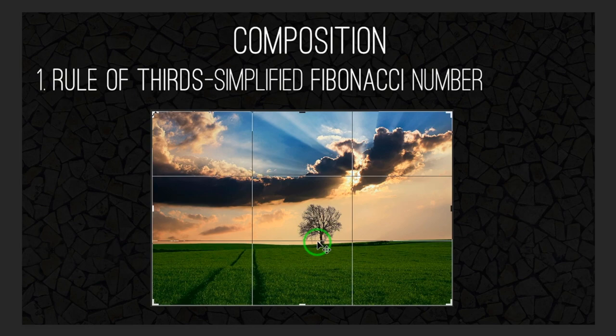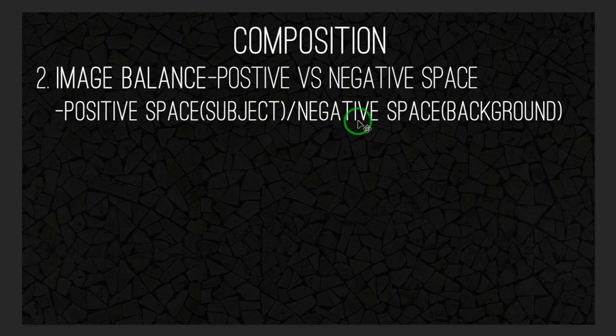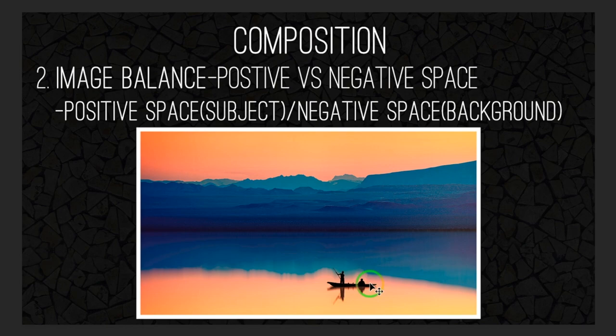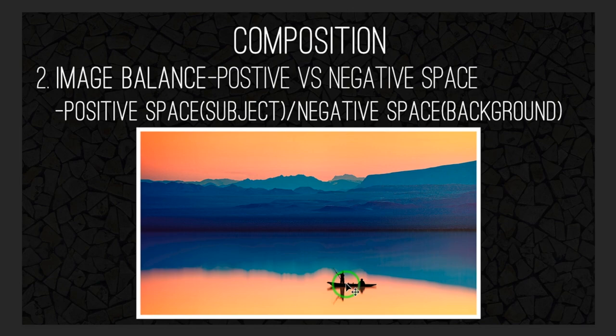The second rule is image balance — positive versus negative space. Positive space is the subject and negative space is the background. The subject is the positive space and the space around the dog is the negative space. Most all images need negative space around the subject to balance them out. The next example is a fisherman — he's the positive space and there's all this negative space around him. You don't have to have lots of positive space; the negative space can actually be more important to the image.